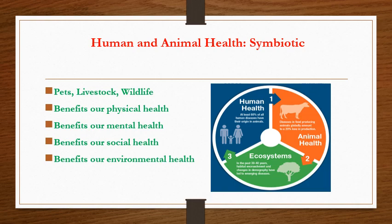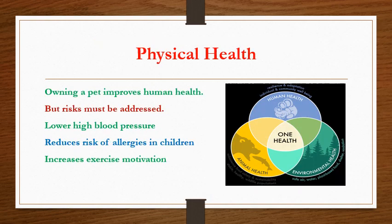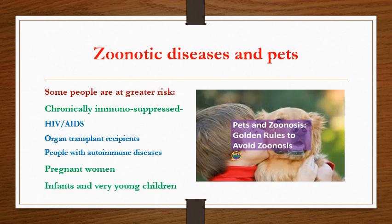As already mentioned, human and animal health are symbiotic. Pets, livestock and wildlife are very much connected to human health — benefiting our physical health, mental health, social health and environmental health. Owning a pet improves human health but there are certain risks. It helps in reducing blood pressure, reducing allergies in children, and motivating exercise. However, pets can also be a cause of zoonotic disease, so some people are at greater risk and we should be careful while keeping pets.